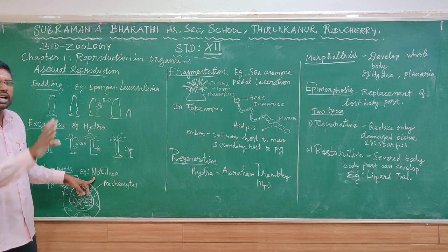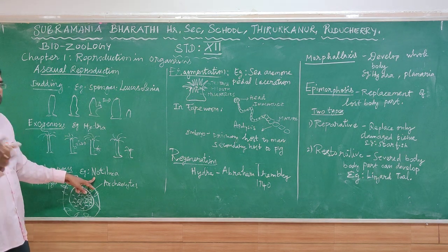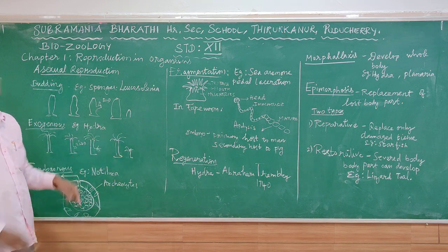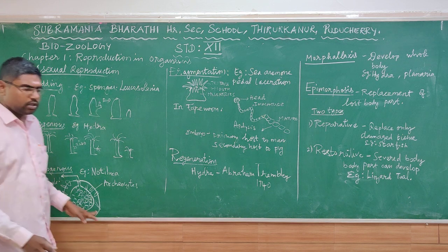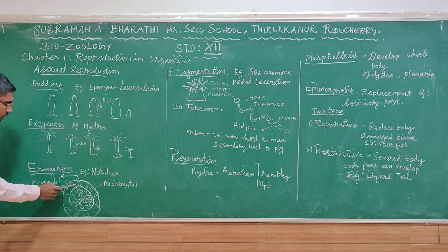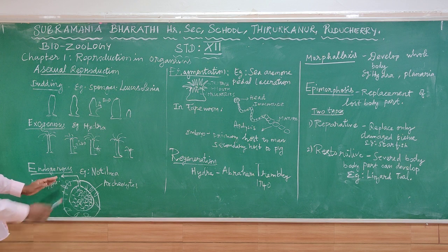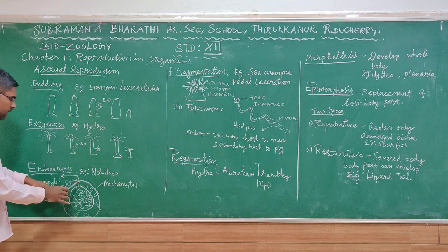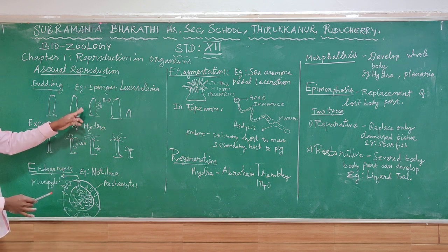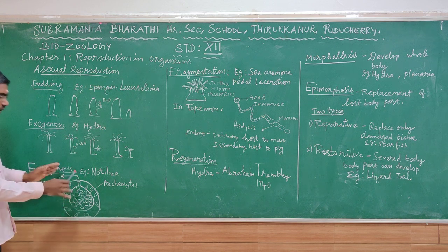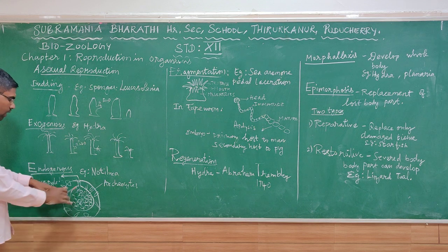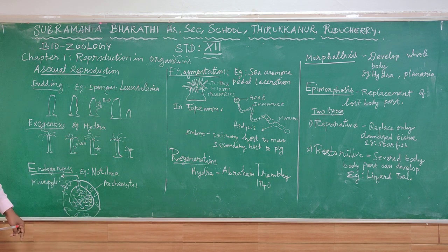In endogenous budding, a structure called a gemmule is formed. We can observe the structure of the gemmule in fresh water sponges. The gemmule has an opening called the micropyle, and it contains a body of cells that form the gemmule.